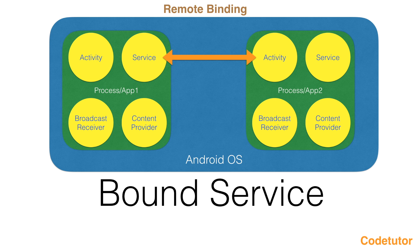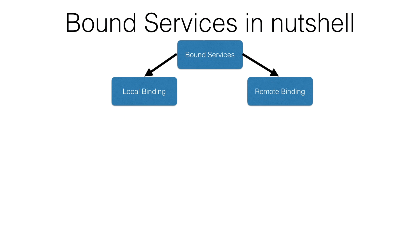So you can think of this as inter-process communication. In terms of implementation, bound services can be of two types: local binding and remote binding.